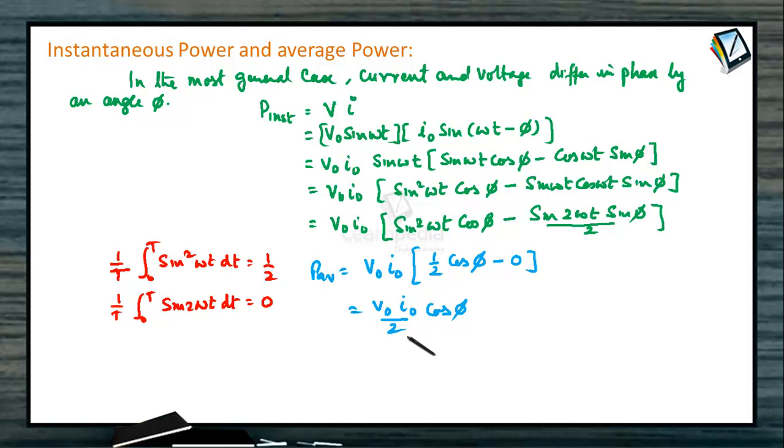V naught by root 2 I naught by root 2 can be written as V rms I rms. So average power will be V rms I rms into cos phi. This will be the average for any electrical circuit where cos phi, phi is the phase angle, cos phi is called power factor. Cos phi we can write this one as power factor.